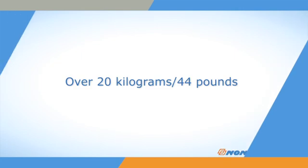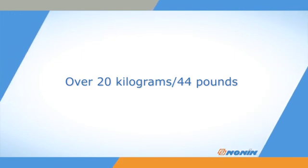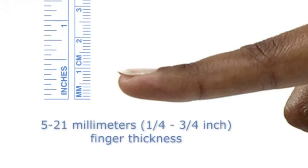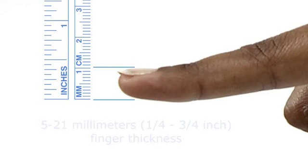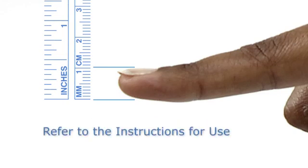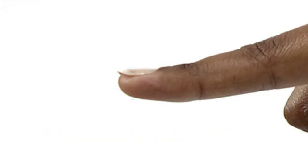The 8000J and 8000JWO WristOx2 sensors are designed for patients over 20 kilograms or 44 pounds in weight. They will fit fingers between 5 and 21 millimeters or one quarter to three quarters inch in thickness measured at the center of the fingernail. Ensure the flex sensor size is appropriate for the patient. Refer to the instructions for use.